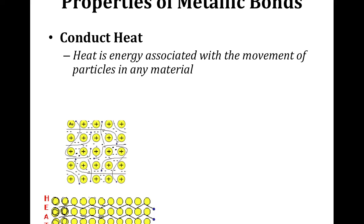The first property, if you look at the table in your notes, is that metallic bonds conduct heat. You need to understand what it means for heat to be conducted. Heat is energy associated with the movement of particles in any material. As we learned, we have electrons that are freely moving about, constantly moving in and between these cations that were formed. Because these electrons are free to move, heat is easily passed through the movement of those particles. The faster they move, the more heat we have, and that heat is easily transferred from one space to another.